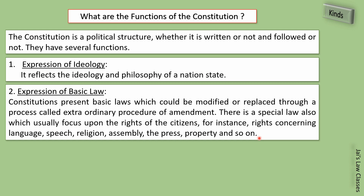The basic law of the constitution tells us how laws can be changed, and it must include the rights of the people — what rights are given to them in that country, such as language rights, freedom of speech, religion, freedom of assembly, press freedom, and property rights. In some countries, property cannot be registered in a citizen's name; it is in the government's name, and citizens only hold it on lease.